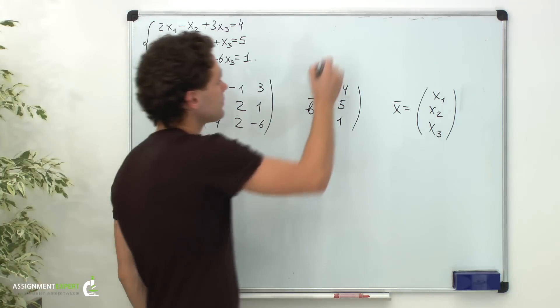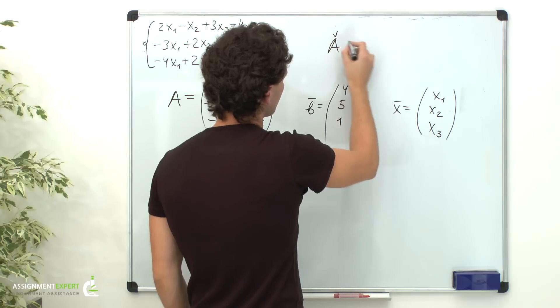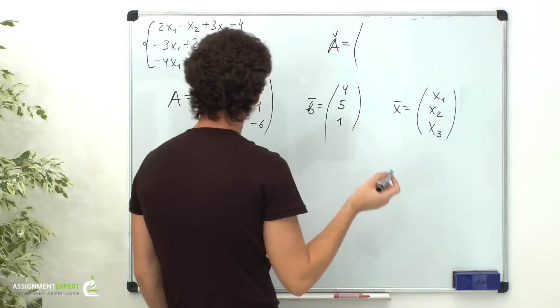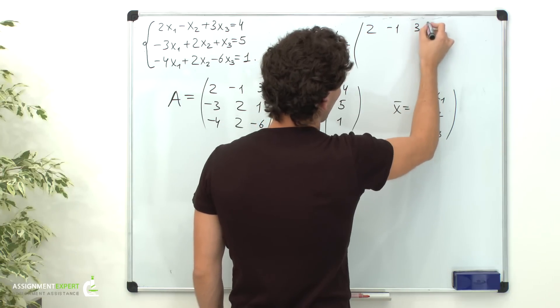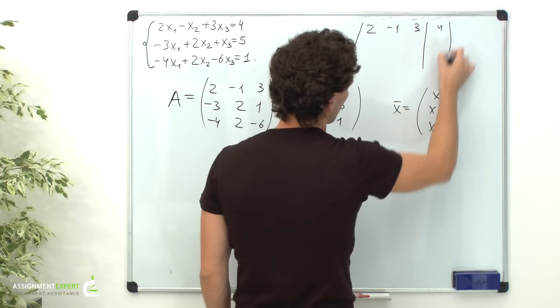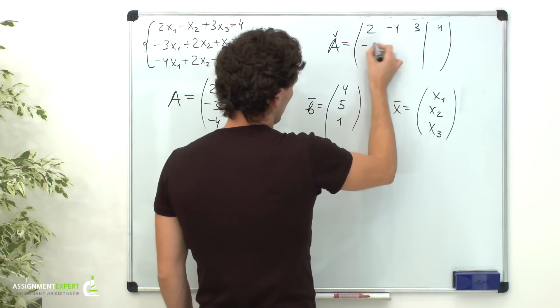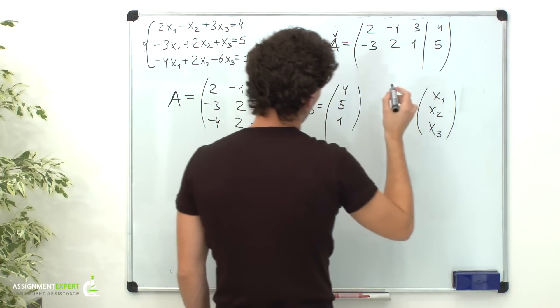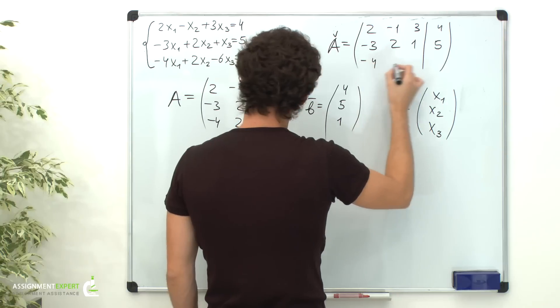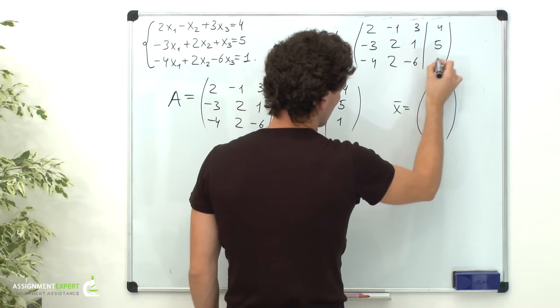Let's write this matrix. In the first row we have 2, negative 1, 3 and the free term 4. In the second row, negative 3, 2, 1 and 5. And in the third row, negative 4, 2, negative 6 and 1.